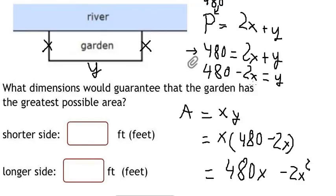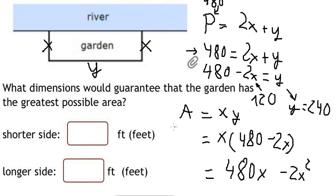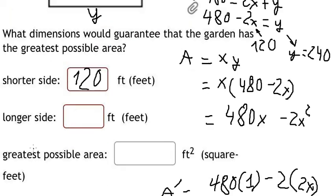After we find 120, we can put 120 here, and we can find the value of y. 480 minus 2 multiplied by 120, we will have 240. We compare 120 and 240. The shorter side, that's about x, so we calculate that's about 120. The longer side, we calculate that's about 240. So we put in here.